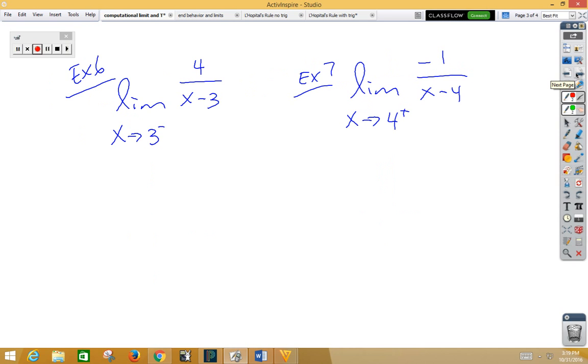In example 6, we have a number other than 1 on the top, but remember, we're allowed to push any constant that we don't like out in front, thus returning it to a 1.